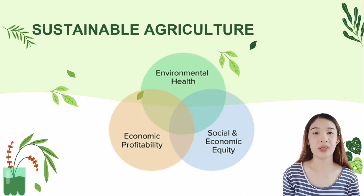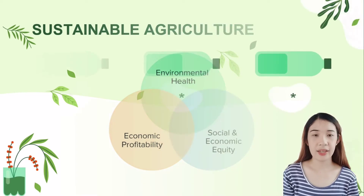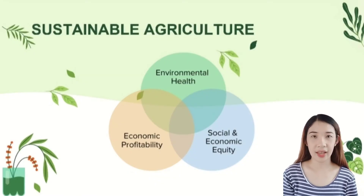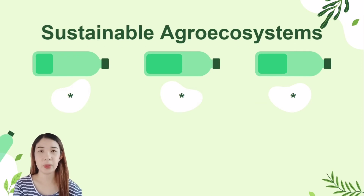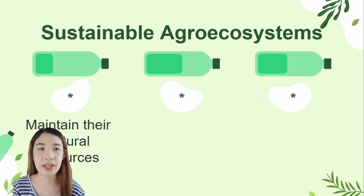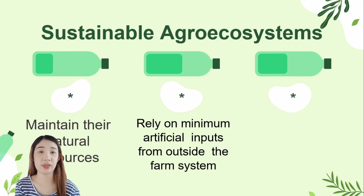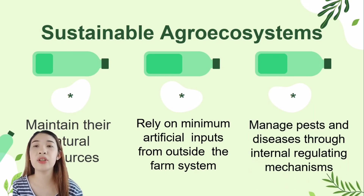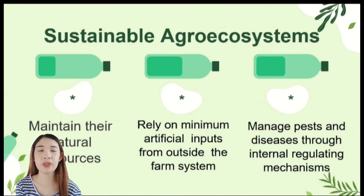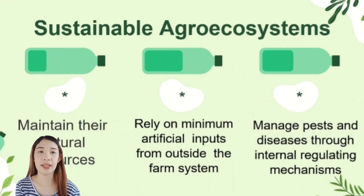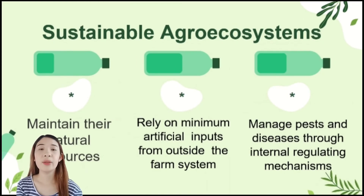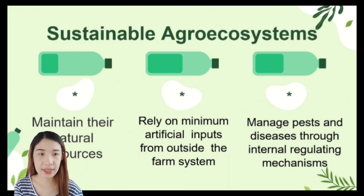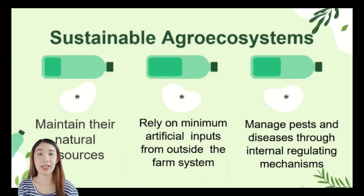Sustainable agriculture contains three components: social or people, environment, and economy. A sustainable agro-ecosystem approach is environmentally sound, economically viable, and socially just — meeting the needs of the present without compromising the ability of future generations to meet their own needs. It maintains the resource base it depends on, with a minimum of artificial inputs, and manages pests and diseases through internal regulating mechanisms.